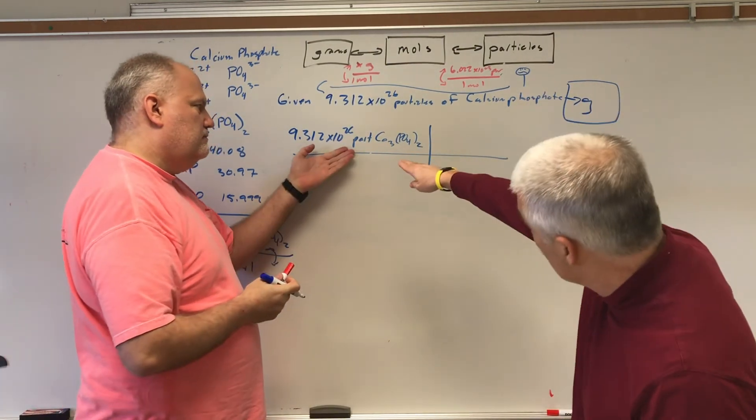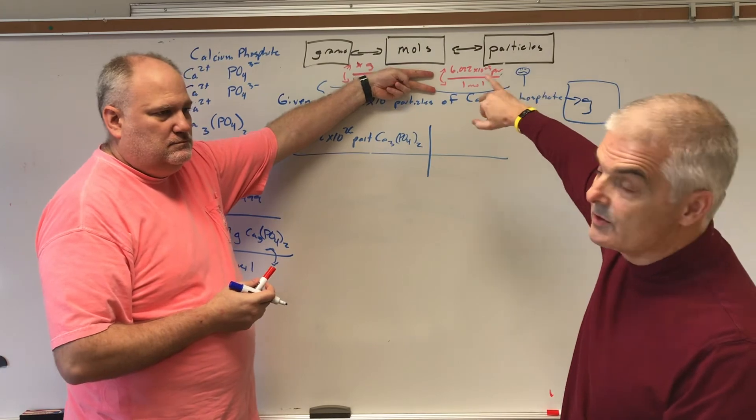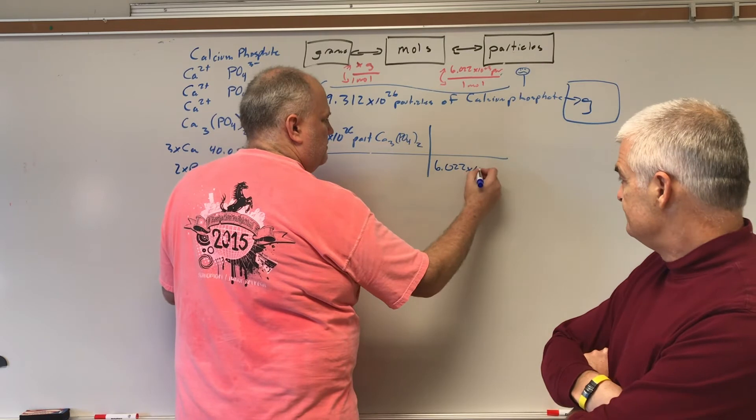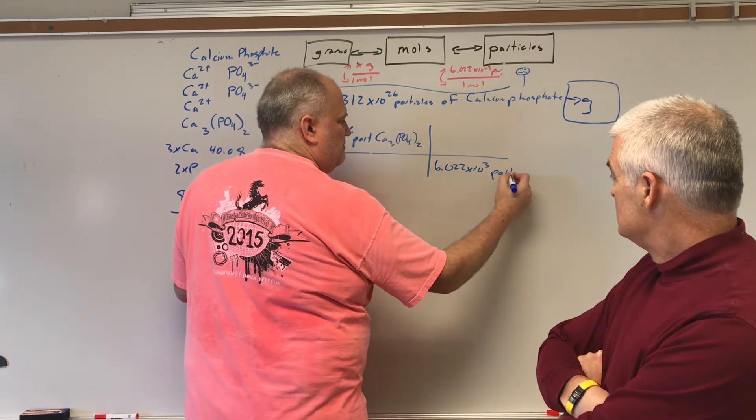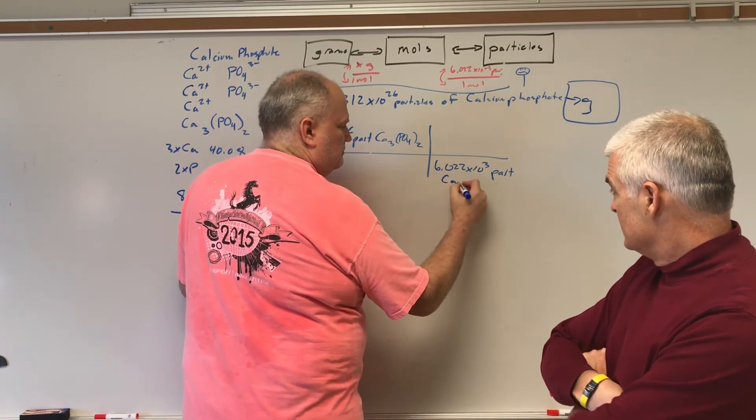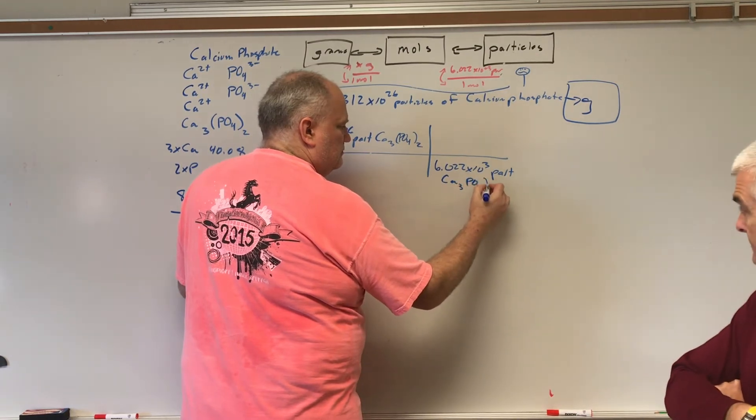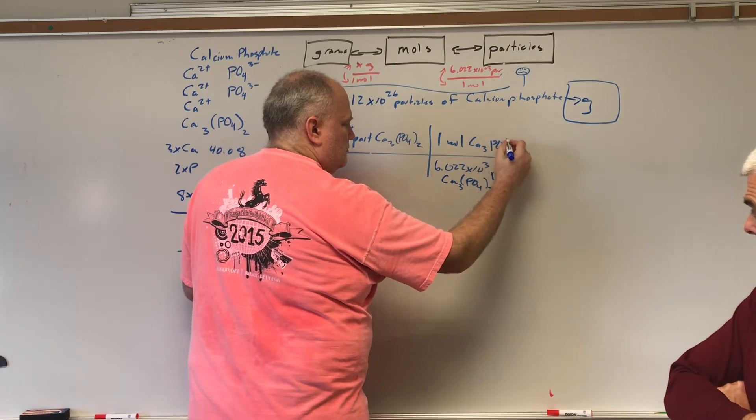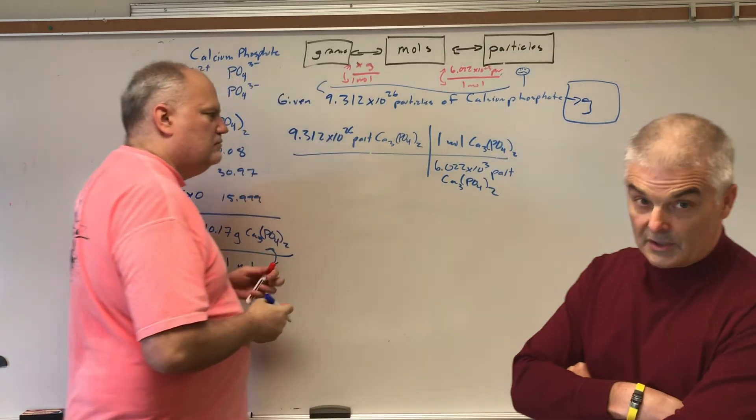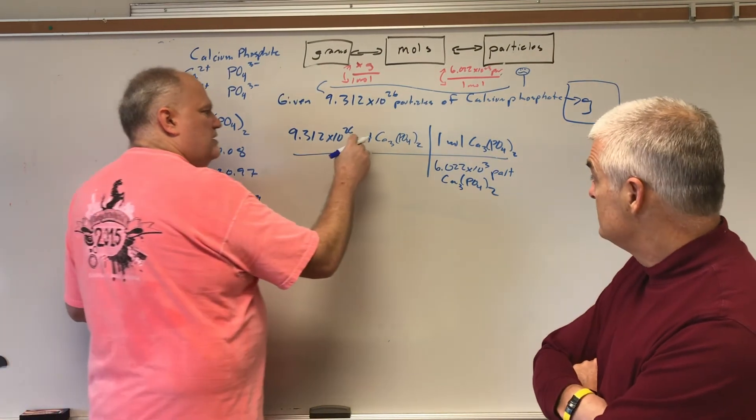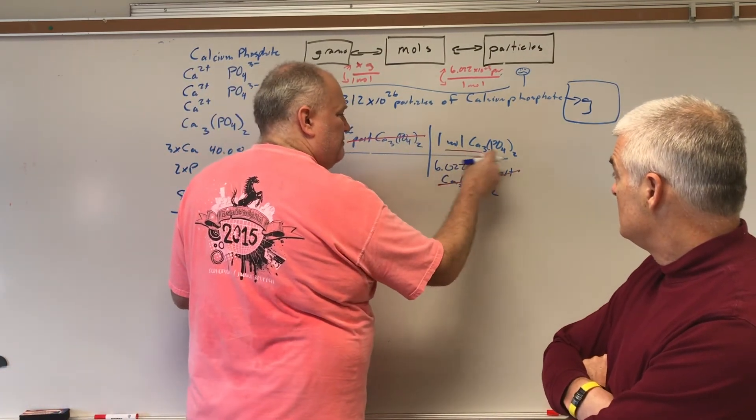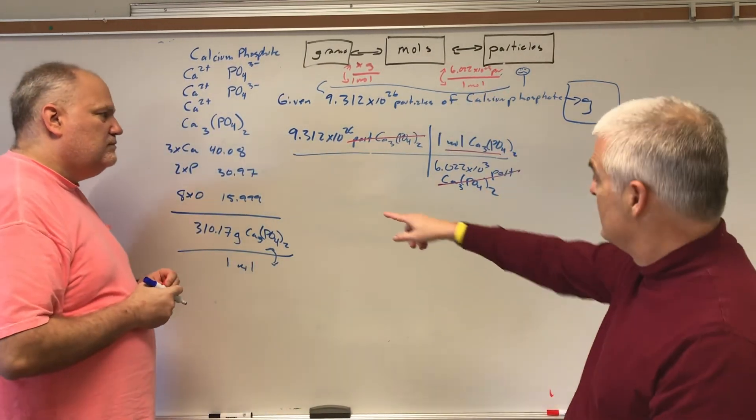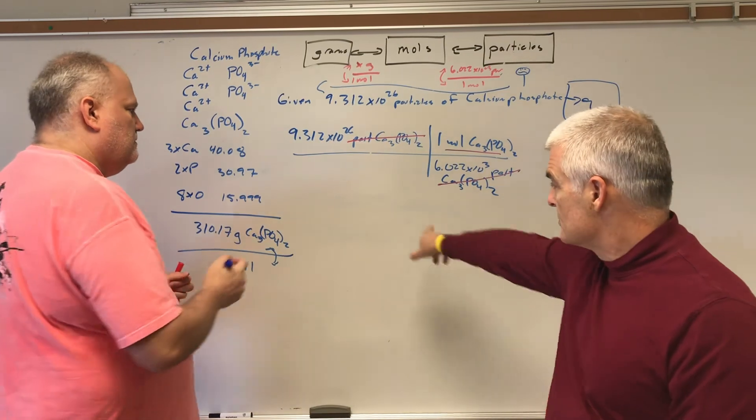What are they trying to have us solve for? They're asking us to solve for grams. So we have to go from here to here, and the only way we can do that is by first stopping in a pit stop at moles. I'm going to use this 6.02 number. Leave it or flip it? We've got particles on top, particles on top. That doesn't work. Flip it. So 6.022 times 10^23 particles of calcium phosphate. We can cross off particles and we end up with moles.